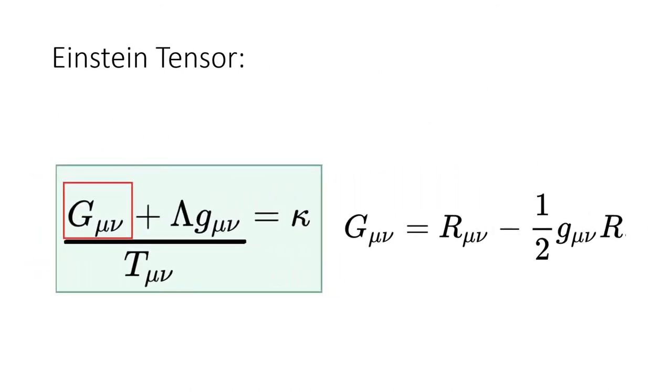Einstein tensor. On the right is the formula of the Einstein tensor. R mu nu is the Ricci curvature tensor, and R is the scalar curvature.